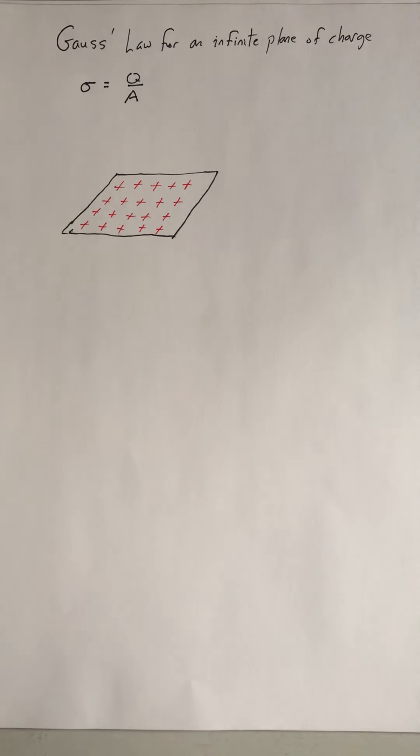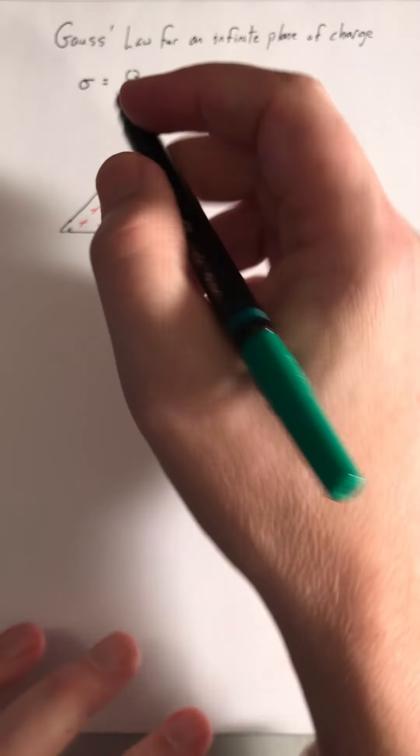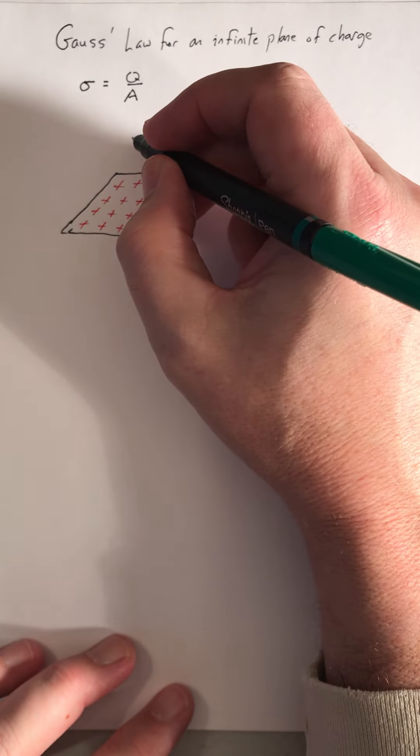And then in applying Gauss's law, we need to pick a surface to apply it to. Now we're going to think about a cylinder.